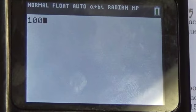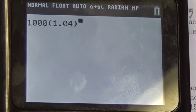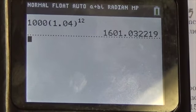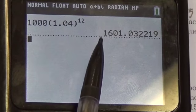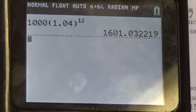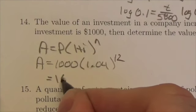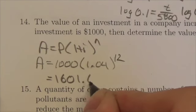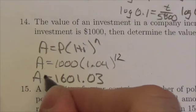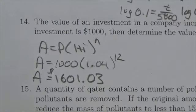So I'll be 1000 times 1.04 to the power of 12. So $1,601 and 3 cents. That's how much we would have in 12 years.